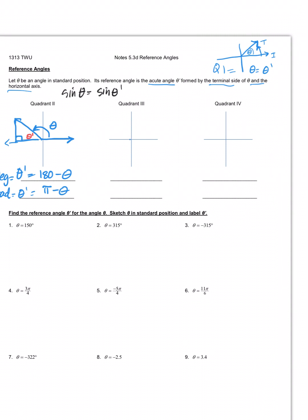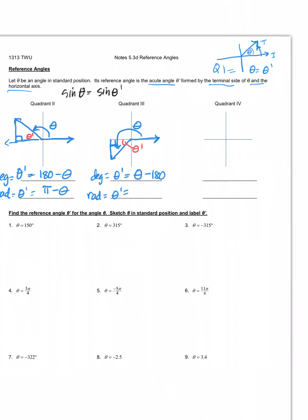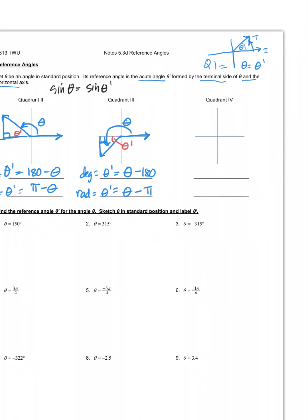What if it's in radians? Well, 180 in radians is pi, so theta prime equals pi minus theta. What if the angle theta comes all the way down to quadrant three? The logic is that theta is greater than 180, but if I took 180 away, I'd be left with the acute angle. So in degree mode, theta prime equals theta minus 180. Similarly in radians, theta prime equals theta minus pi.